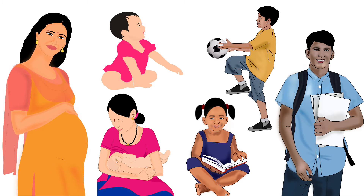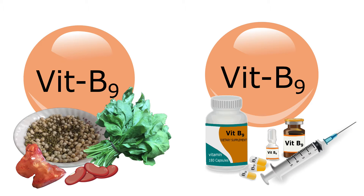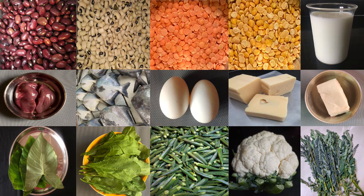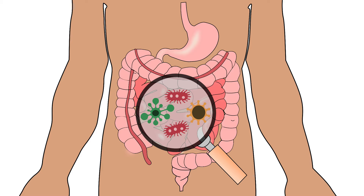Vitamin B9 is an important water-soluble B vitamin. It has two forms: folate and folic acid. Folate is the natural form and is found naturally in foods. Folate is also produced by bacteria in our intestines.